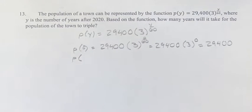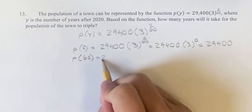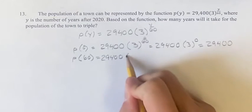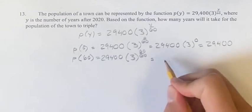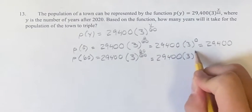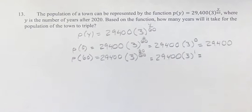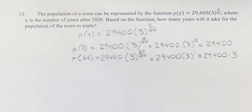Let's try 60. Again that's the next number that's going to be clean with an exponent right here. p(60) is equal to 29,400 times 3 to the 1, which is equal to 29,400 times 3.